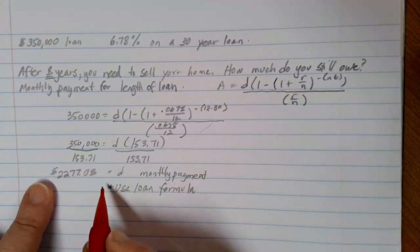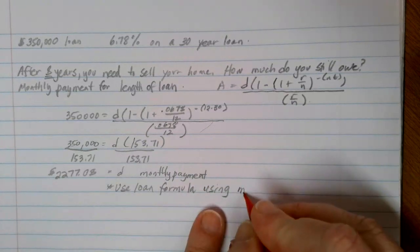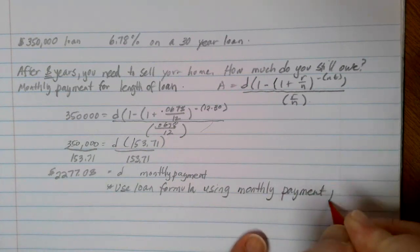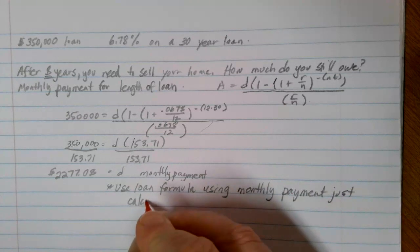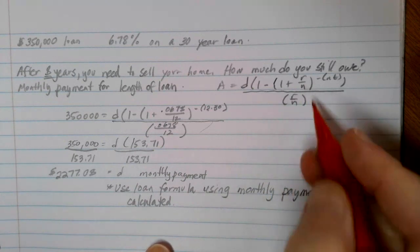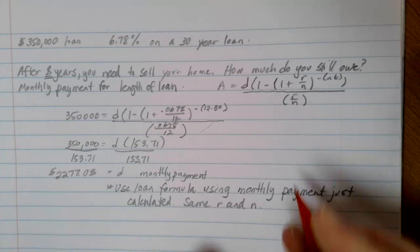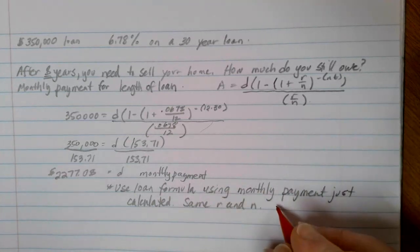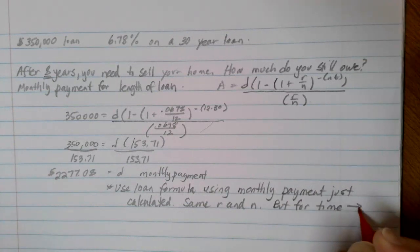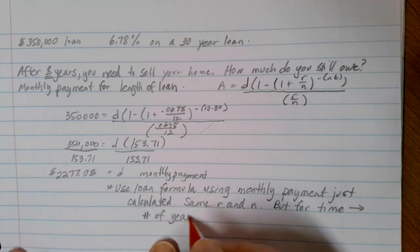This time, we already know the monthly payment that we just calculated. Because that's how much we'll have been paying every month for those eight years. And then our loan information is the same, so we're going to be using the same R and N values. But this time for our time, if we want to pay something off early, what we need to do is we need to change our time to the number of years remaining unpaid on the loan.